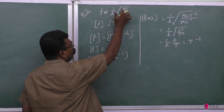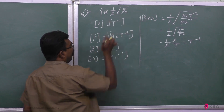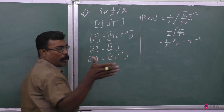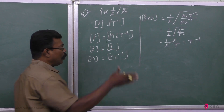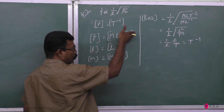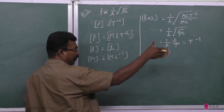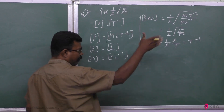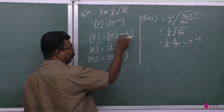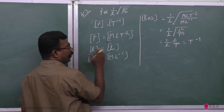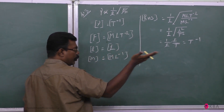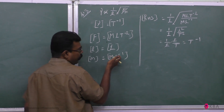On the RHS, we have 1/L. Then F: force is mass times acceleration, so mass M, and acceleration is meter per second squared — that is L·T⁻². So F has dimensions M·L·T⁻². And then M here is mass per unit length, so mass divided by length — M·L⁻¹.